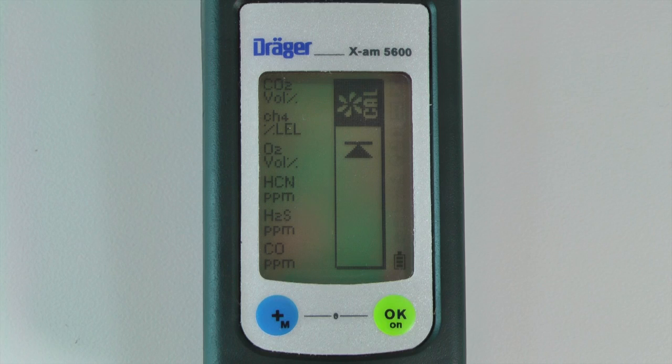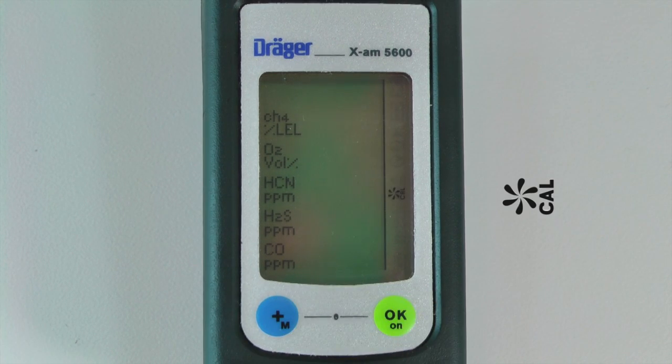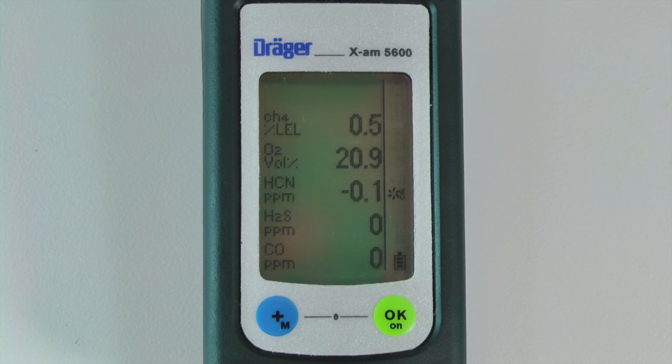To begin the fresh air calibration, press the OK button once the fresh air icon has been selected. The sensor reading should now blink.